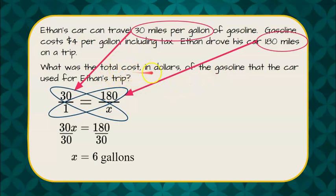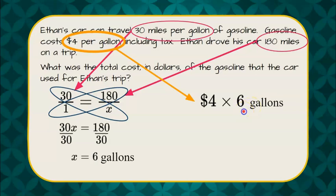But we're not done because we were asked what was the total cost in dollars for the gasoline. Now we know that we paid $4 per gallon, and we used 6 gallons. 4 times 6 is $24. So we spent $24 on gasoline on Ethan's trip.